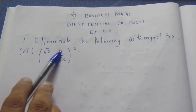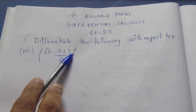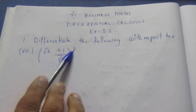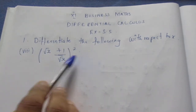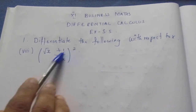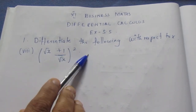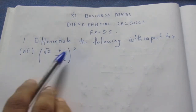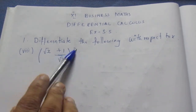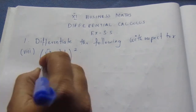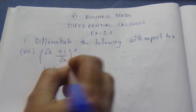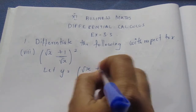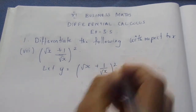Sum 8 means root x plus 1 by root x, the whole square. If you have a whole square like this, you will use the (a + b) whole square formula. So let y is equal to root x plus 1 by root x, the whole square.